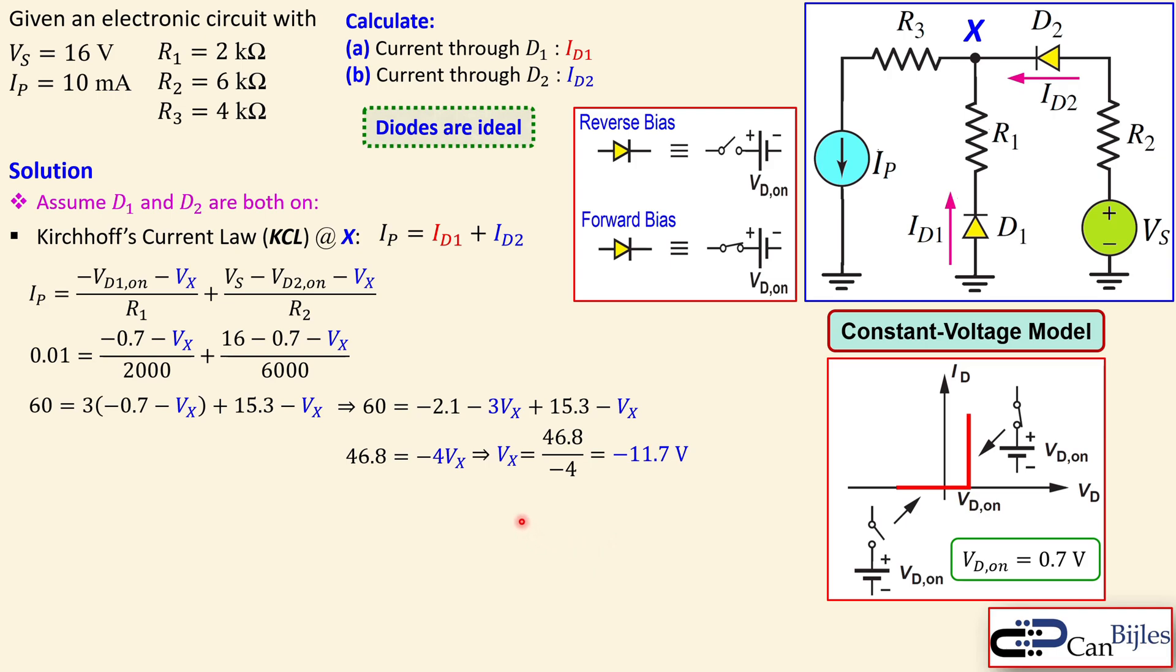Now we have VX and that gives us the diode currents. ID1 is minus VD one on minus VX over R1. When we substitute the values, we get 5.5 milliamps exactly. Since this is larger than zero, the current through D1 means D1 is on, so our assumption that D1 was on is correct.